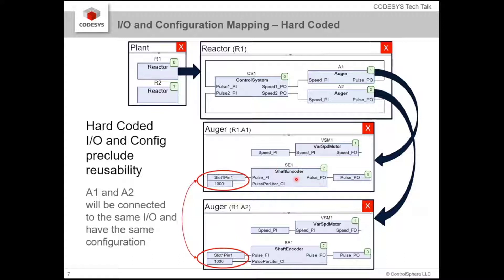The shaft encoder needs to get pulses from the shaft encoder and it also has to have a scaling factor — depending on how many pulses per liter of material being augered out or something along those lines. So we need to connect it to an IO point and we have to give it a configuration. In the old days we just hard-code that variable, that global variable, hard-code some parameter, and we'd be done.